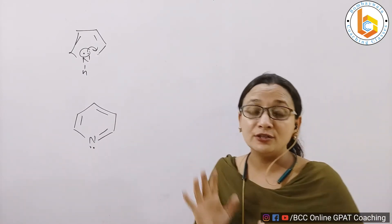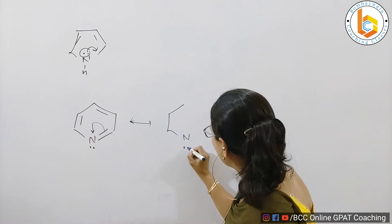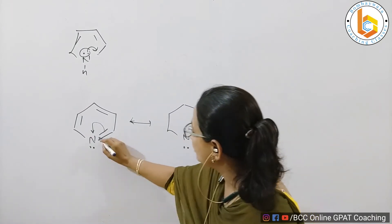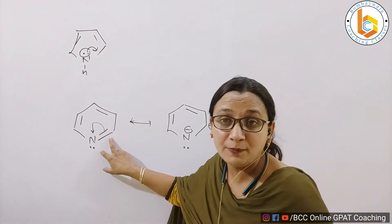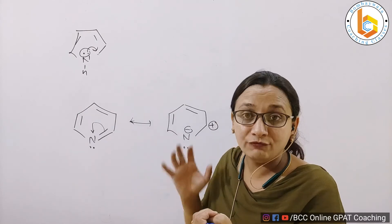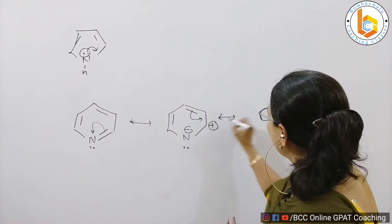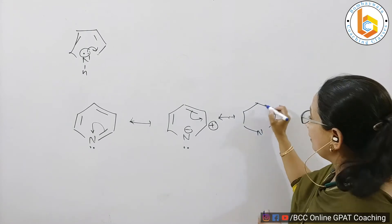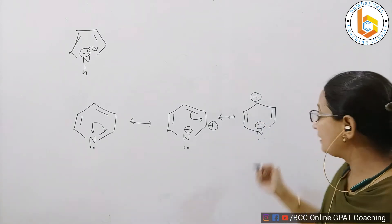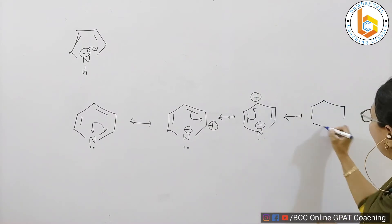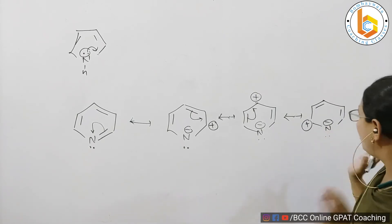Now see how I write the resonating forms for pyridine. A double bond is moving towards this nitrogen and depositing a negative charge here, and at the tail of this double bond I am getting a positive charge. Do not touch this pair of electrons, because whatever is moving are the pi electrons which are inside the ring of pyridine. Double bond is moving to nullify the positive charge, and at the tail of this double bond, a positive charge. Again, double bond moves to nullify the positive charge and at the tail of this double bond, a positive charge. So that is how it stops — here it stops.